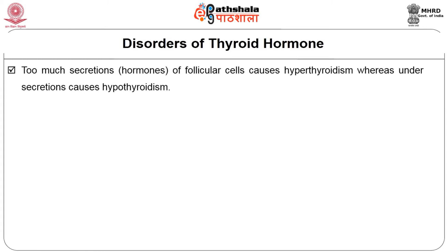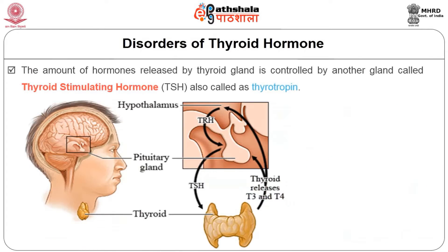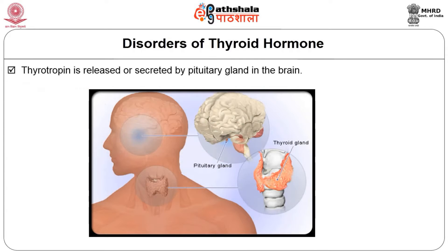Regarding disorders of thyroid hormone: too much secretion from follicular cells causes hyperthyroidism, whereas undersecretion causes hypothyroidism, which is controlled by thyroid stimulating hormone, also called thyrotrophin, secreted by the pituitary gland in the brain.